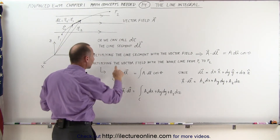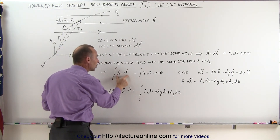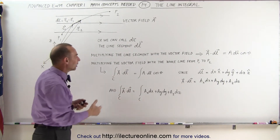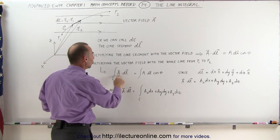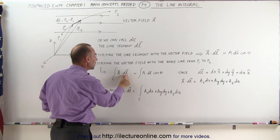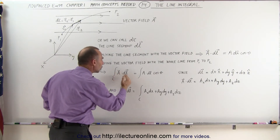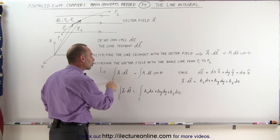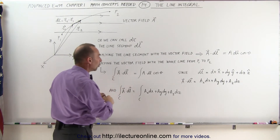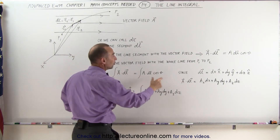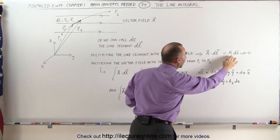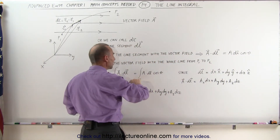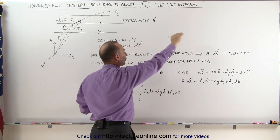Integration means adding up all the small multiplications — we multiply the vector field times dl along that particular line. We integrate along the entire curve. Since we know that A dot dl equals A dl times the cosine of theta, we can say we simply integrate along that line, multiplying each small segment dl by the vector field magnitude and the cosine of the angle between them.